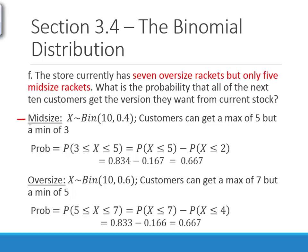In this binomial case, you can choose whichever you want as your success. If we consider customers buying an oversized racket a success, then X is binomial with probability 0.6 — 60% of customers wanted an oversized racket. Customers can get at most seven because that's how many oversized rackets there are, but a minimum of five, because if fewer than five want oversized rackets, they don't have enough mid-size rackets. You could also think about it in terms of mid-size: only five mid-size rackets means at most five people can want mid-size, and at minimum three. If you consider mid-size a success, that means 40% of people wanted a mid-size racket.